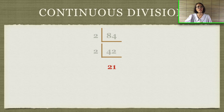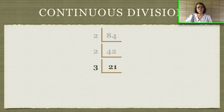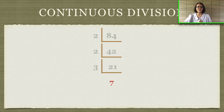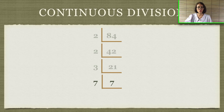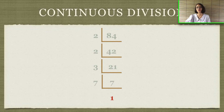21 cannot be divided by 2, so we try dividing by 3: 21 divided by 3 equals 7. Then 7 cannot be divided by any other number, so we divide it by itself: 7 divided by 7 equals 1. Because we now have 1, that means it's the end of our continuous division.